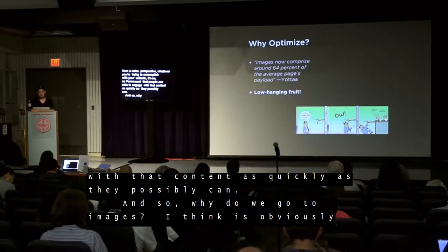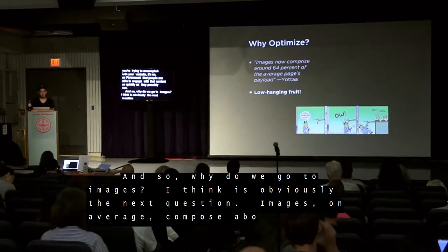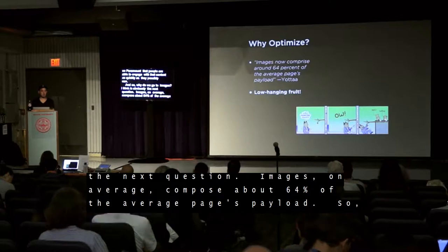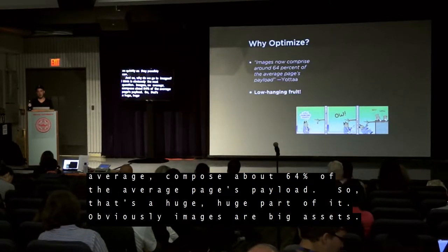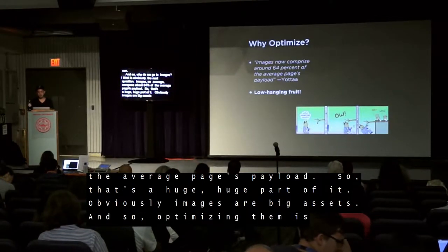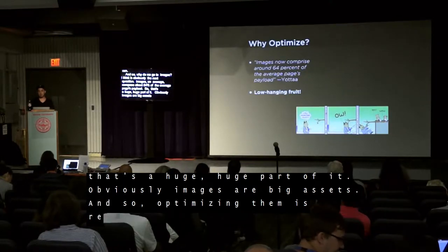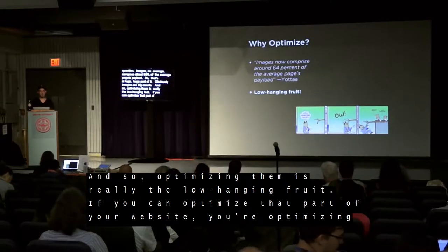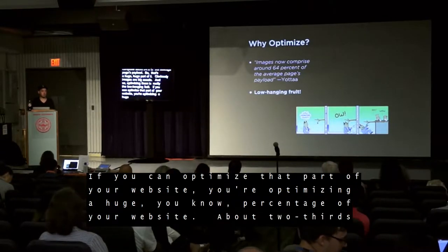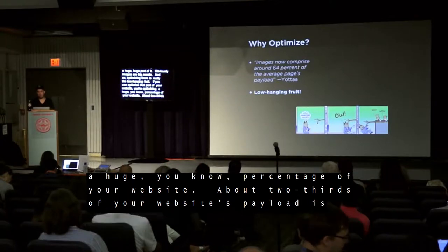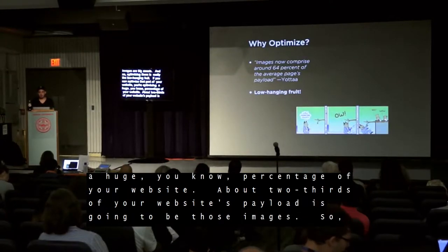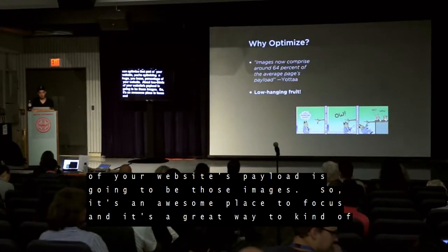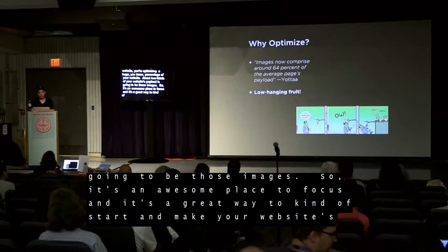Why do we go to images? Images on average compose about 64% of the average page's payload — that's a huge part of it. Obviously images are big assets, and so optimizing them is really the low-hanging fruit. If you can optimize that part of your website, you're optimizing about two-thirds of your website's payload. It's an awesome place to focus — a great way to start and make your website as performant as it could possibly be.